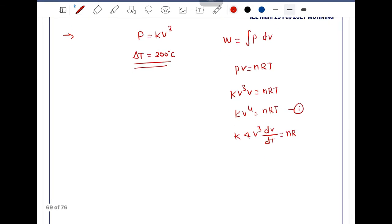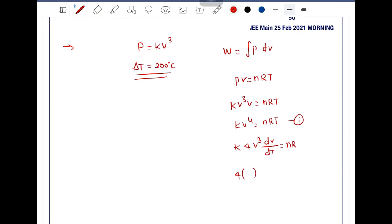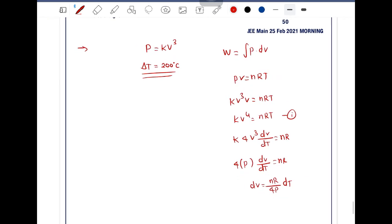The derivative of T with respect to T is 1. From this we get kV³, which can be written as P, so P(dV/dT) = nR. Therefore, dV = (nR)/(4P) dT.